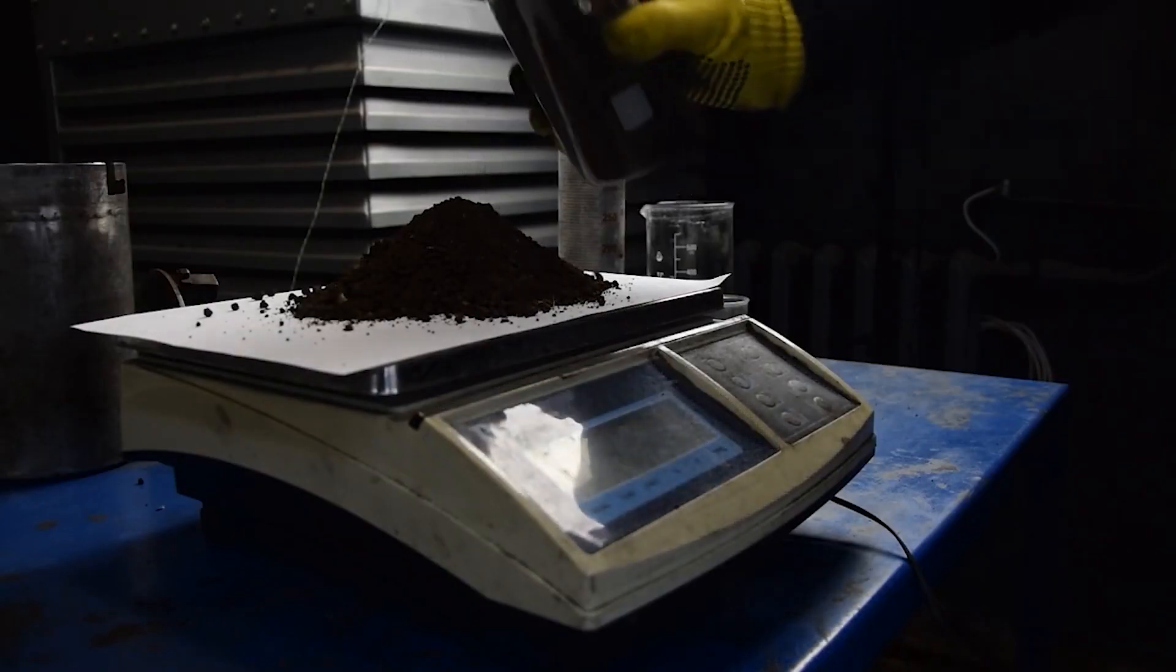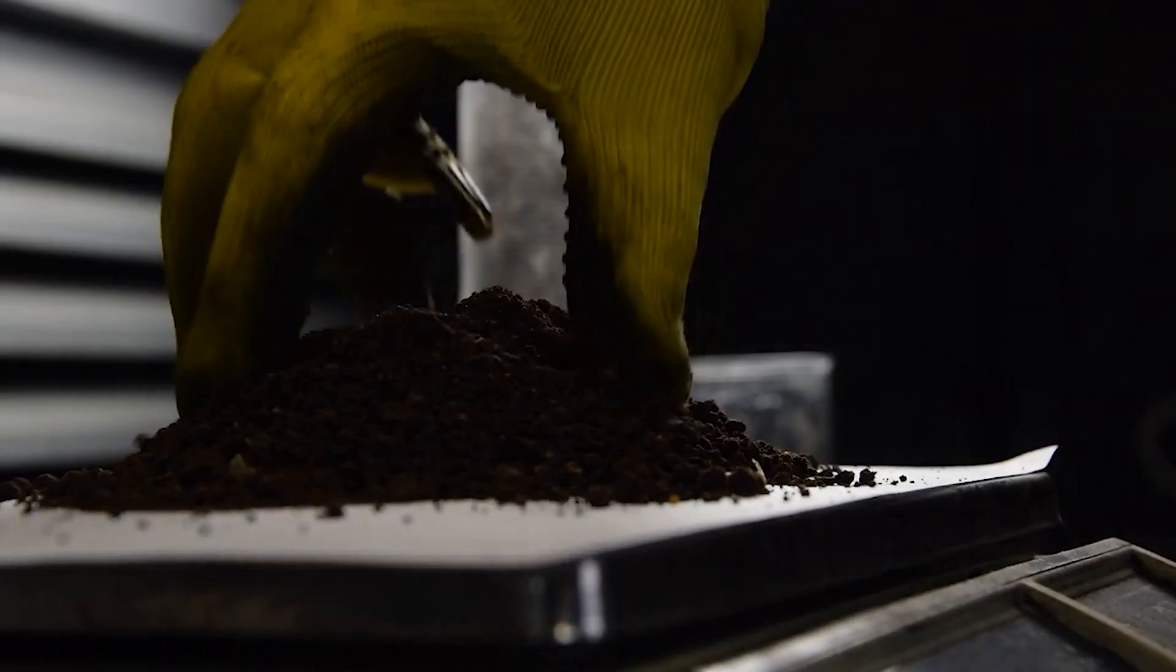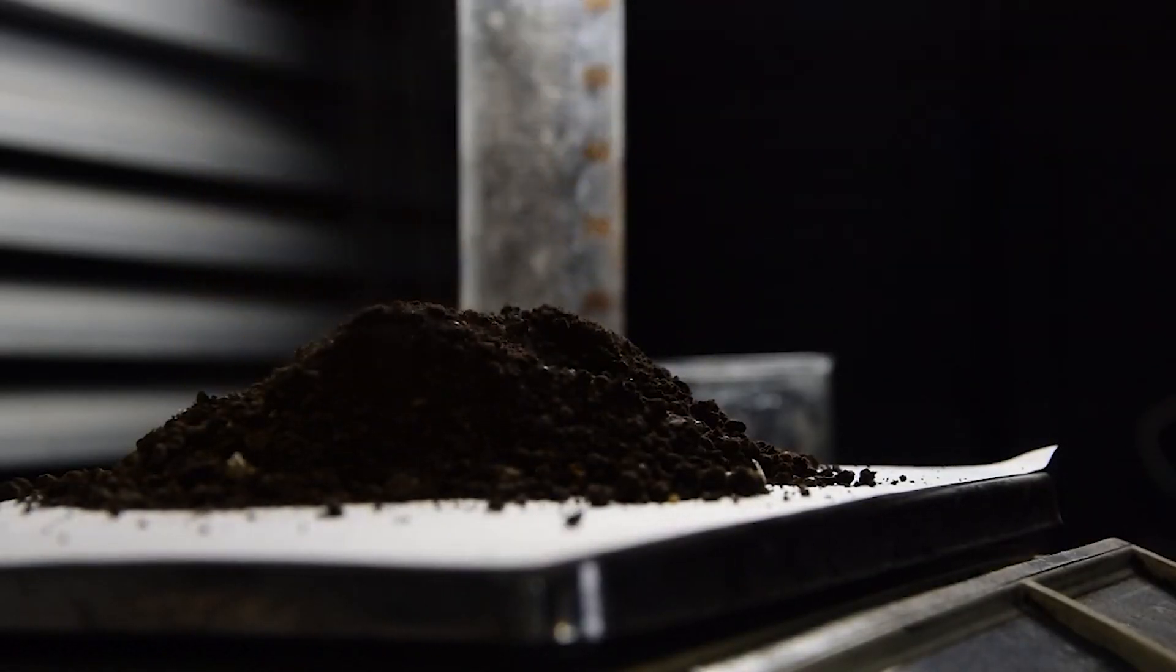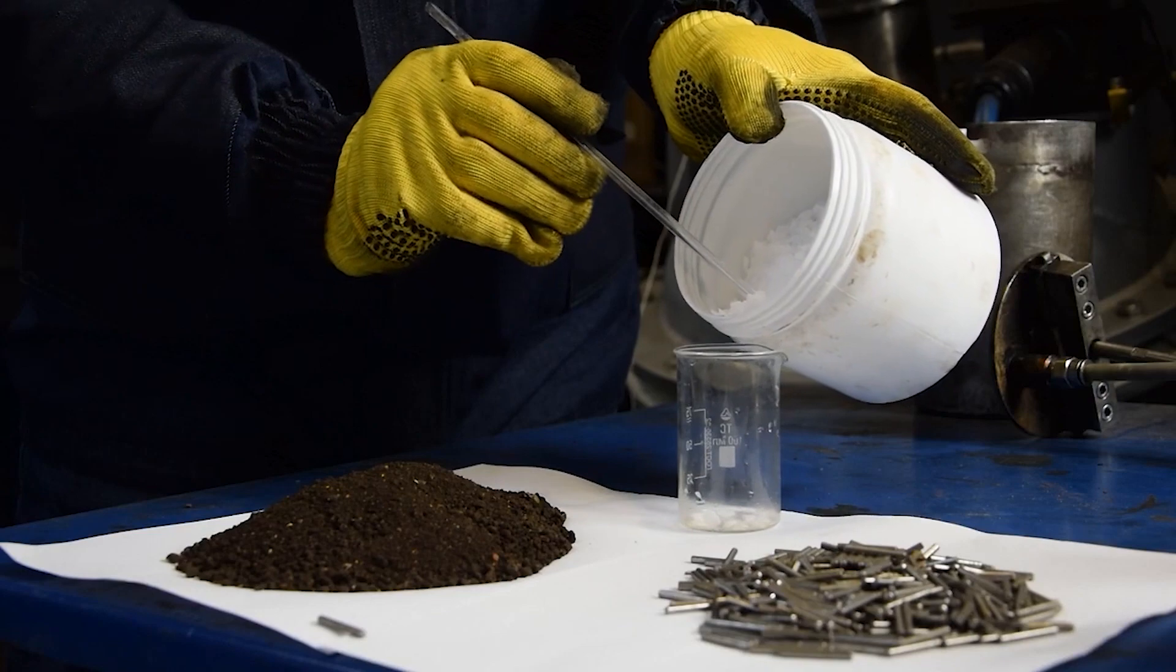The production of humic fertilizers and products is based on the property of humic acids to form water-soluble salts with sodium, potassium, and ammonium.